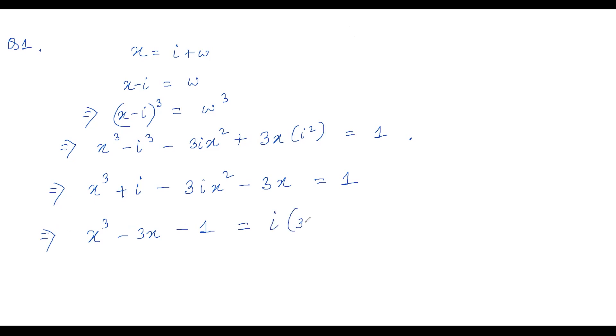i times 3x squared minus one. And now you see that we need a polynomial with integer coefficients, but we have i here. So that tells us to square both the sides, because if I square up i, I would get minus one. Let's square both the sides. So x cube minus 3x minus one whole square equals to